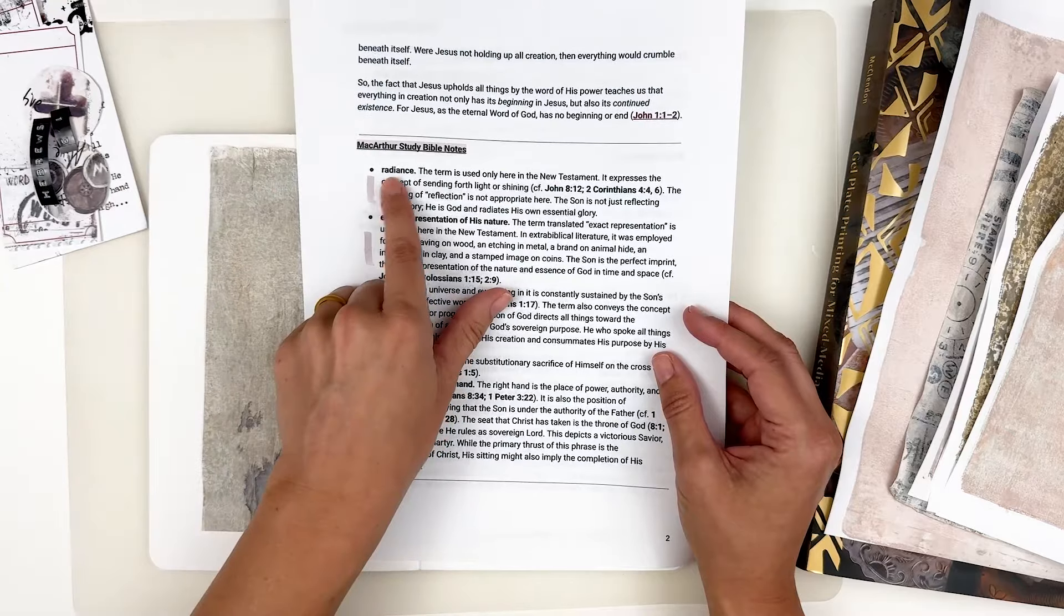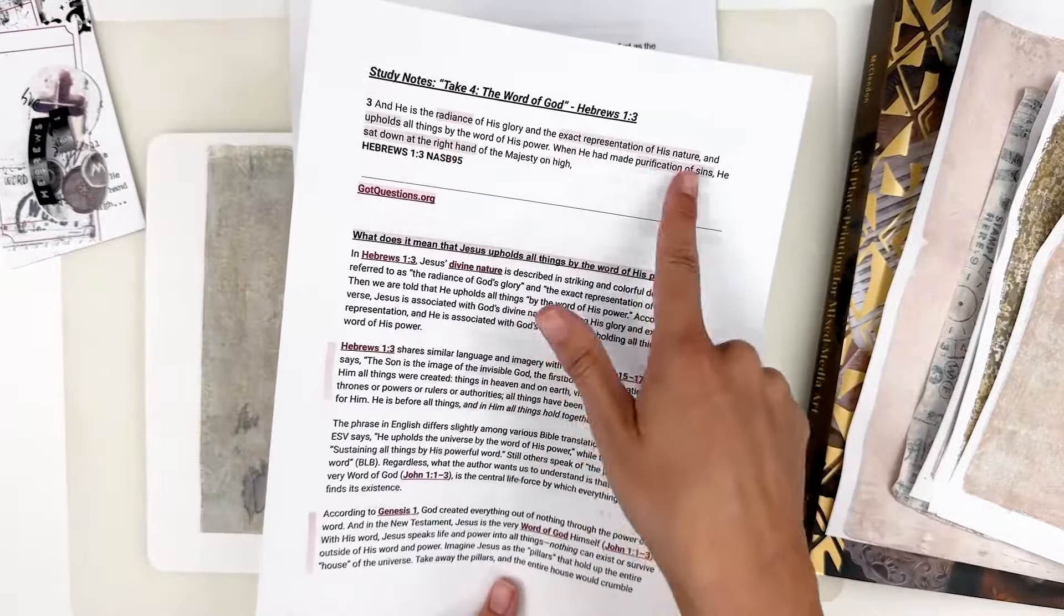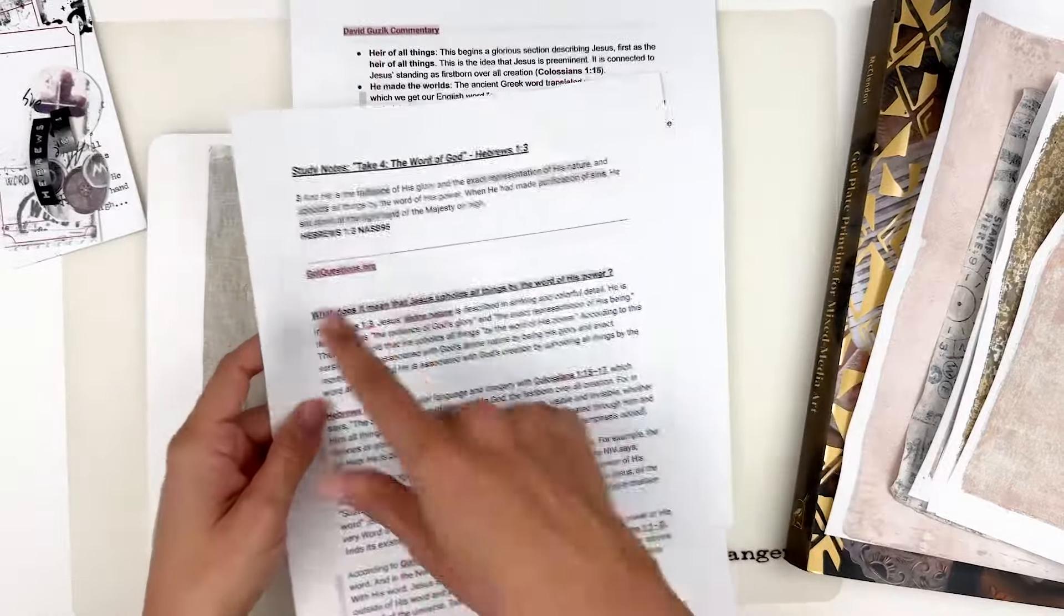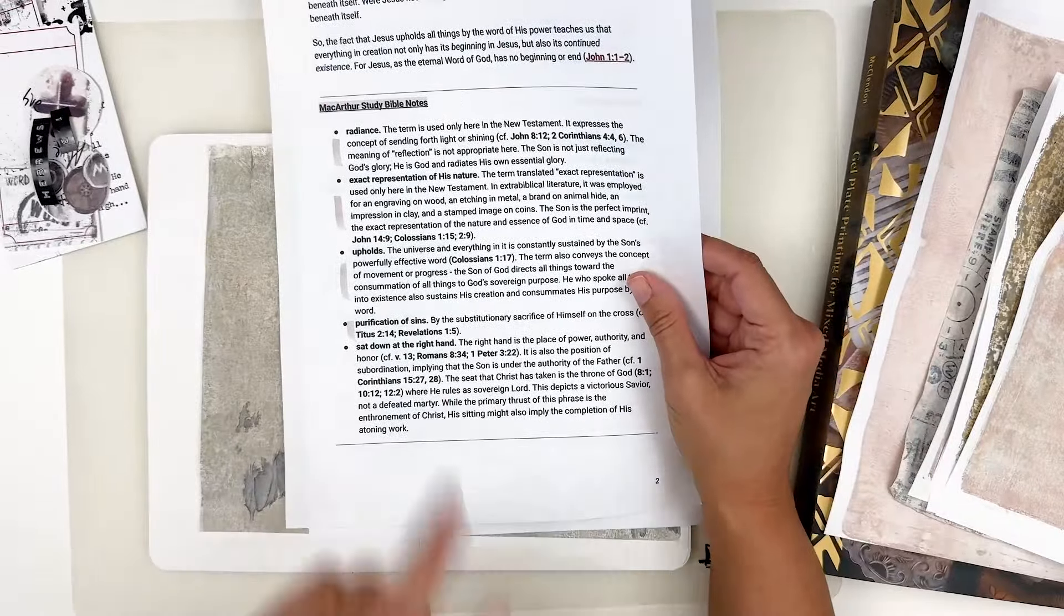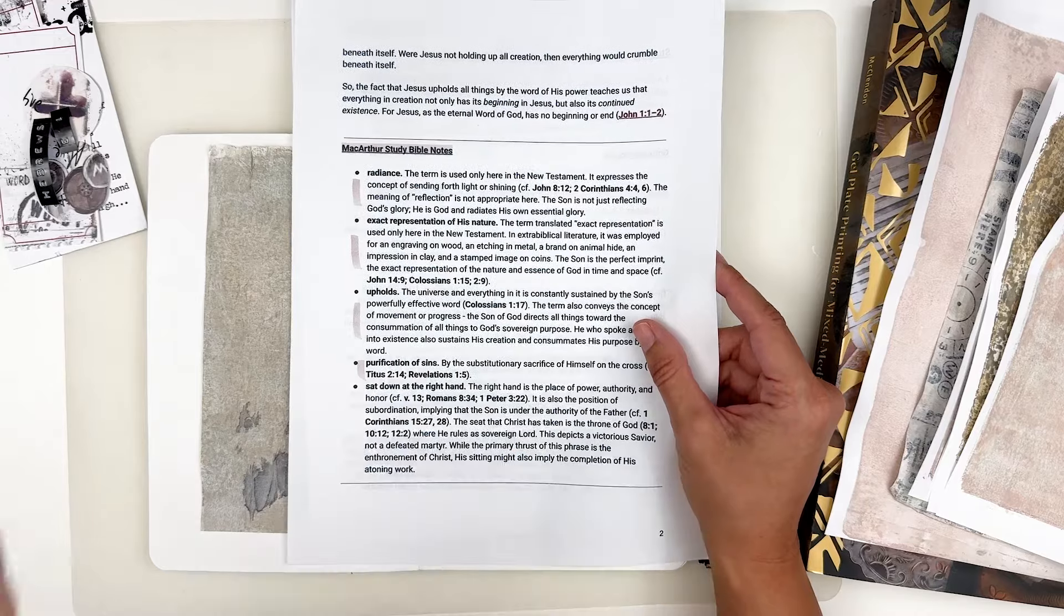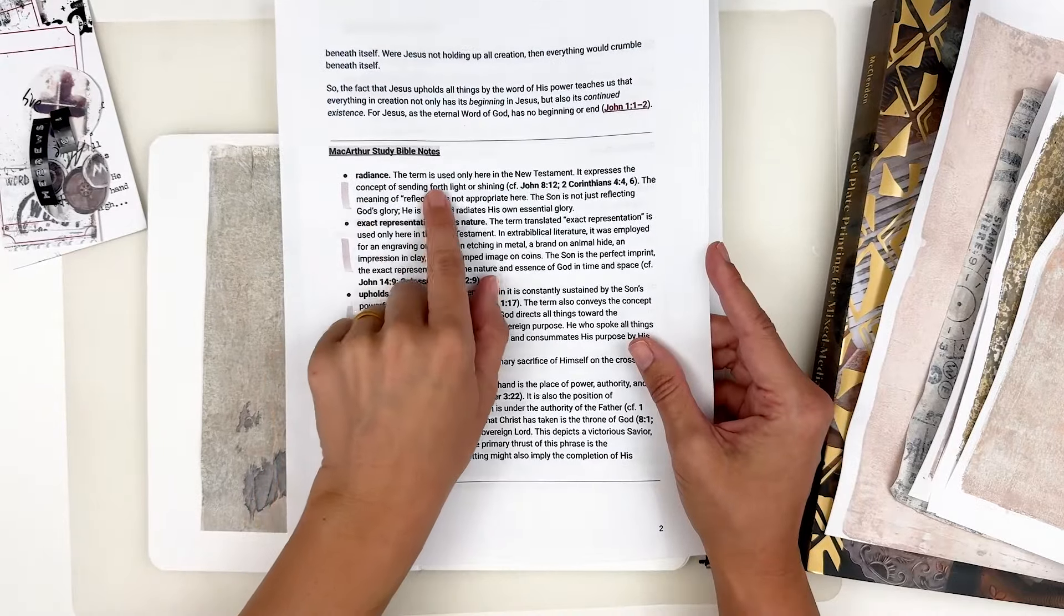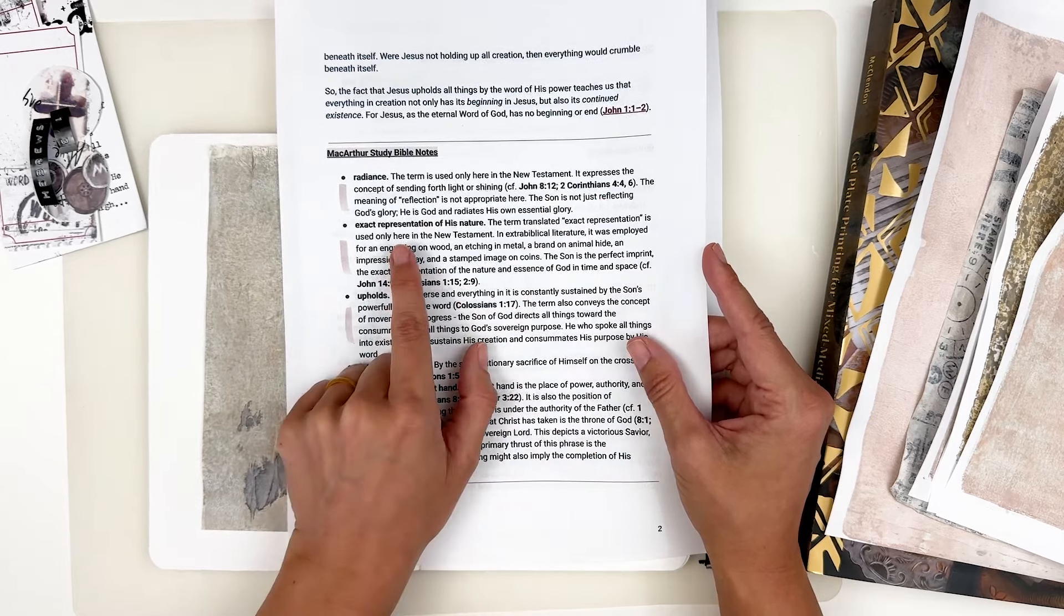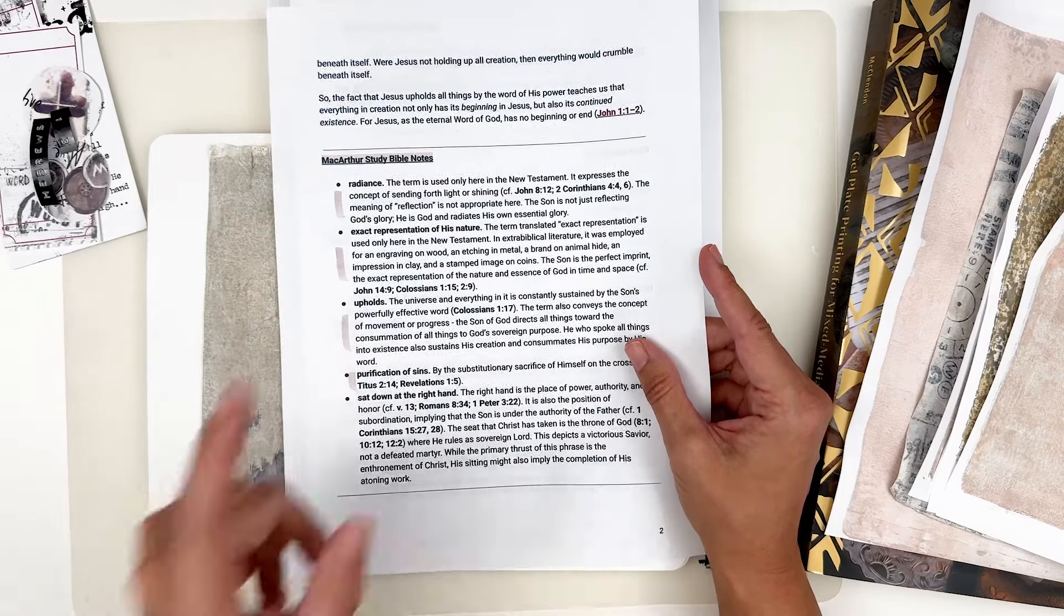Carrying onto the MacArthur study Bible notes. The way that the study Bible notes work is he usually references like a specific phrase or word and then commentates on that within the verse. I did on this one, I went ahead and highlighted those areas in the passage that are referencing with the MacArthur study Bible notes. The last two sessions, I kind of did my own highlighting and underlining of things that were jumping out to me and that I found important, but this time around, I went ahead and just did it off of the MacArthur Bible. In reference to radiance, this was so interesting.